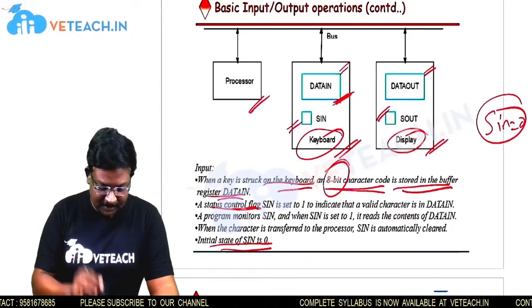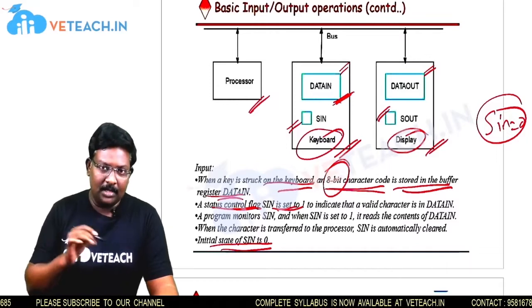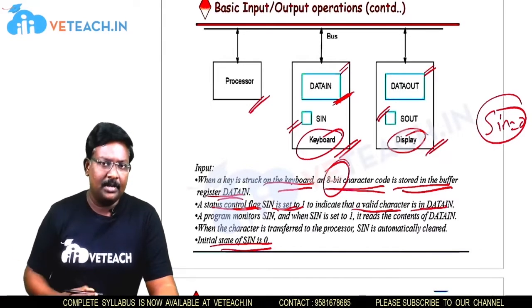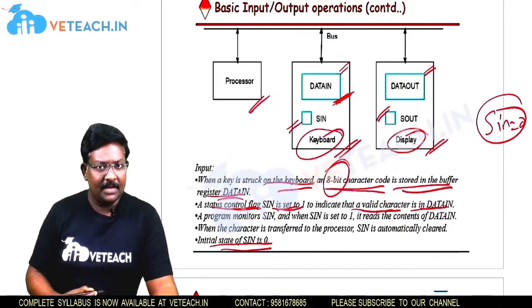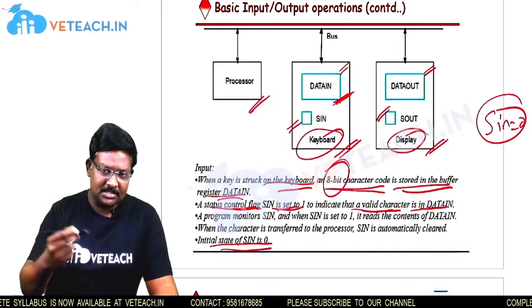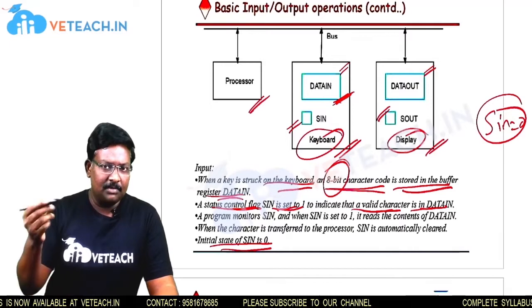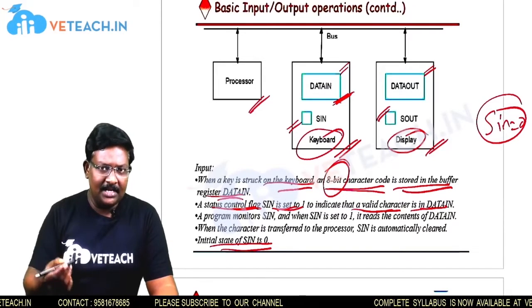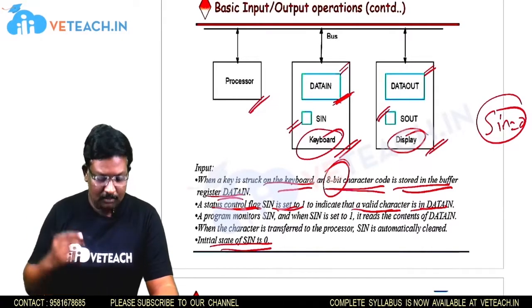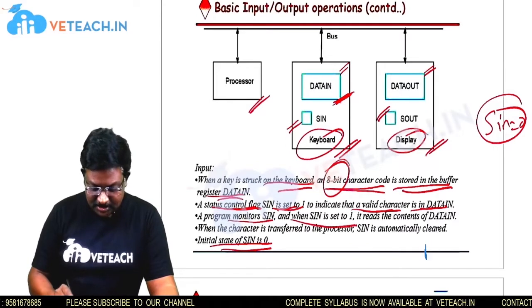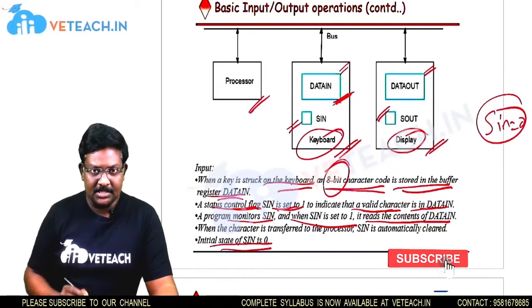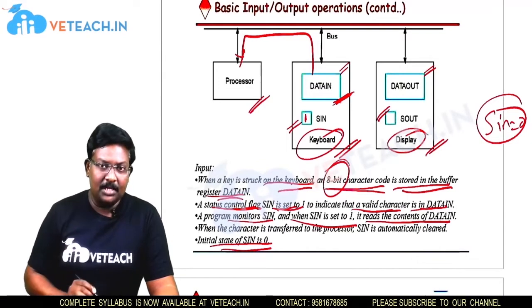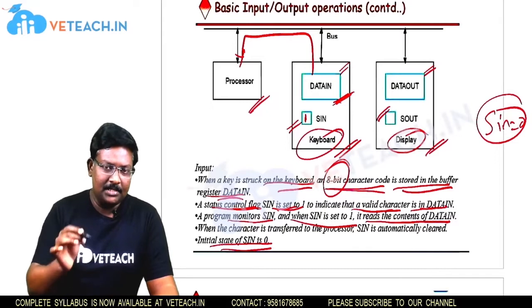After that, we check the status flag. The SIN flag is set to 1 when there is a valid character in the data-in register. This is an important point: SIN will be set to 1 only when the data-in register holds valid data. Otherwise it remains 0. A program monitors SIN, and when SIN is set to 1, it reads the content of the data-in register, transferring data from the input device to the processor.